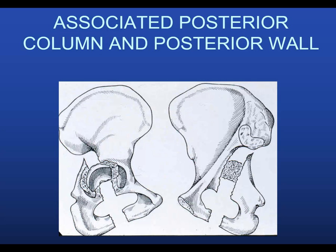The associated posterior column and posterior wall fracture is shown here — it's a common fracture type. Not as common as transverse posterior wall, but you will see cases where you have a complete posterior column fracture and a posterior wall. Sometimes you have an extended posterior wall fracture that extends into the posterior column — probably not a complete posterior column-posterior wall fracture, but there is clearly a column disruption with the posterior wall.